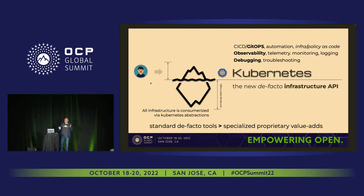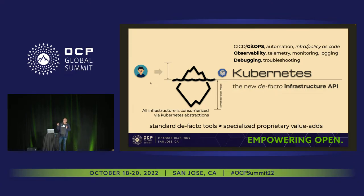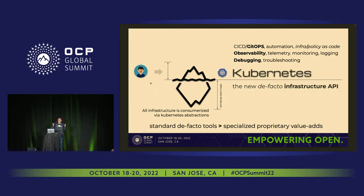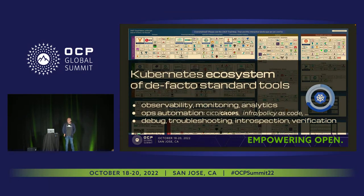Kubernetes, whether you consider it to be hard or not, is a de facto infrastructure API. People rely on it today for consuming infrastructure on top of clouds, private environments, and at the edge everywhere. It has a very rich ecosystem of de facto tools, and de facto tools are very important — they're much more important than specialized proprietary tools. Being able to use the same tools throughout different cloud environments and private environments gives you an ability to basically treat everything the same. You don't have to have drastic differences in operational procedures if you're running in the cloud versus on-prem. The Kubernetes ecosystem is really vast: there are observability tools, operational tools, infrastructure-as-code — everything is coalesced around Kubernetes.